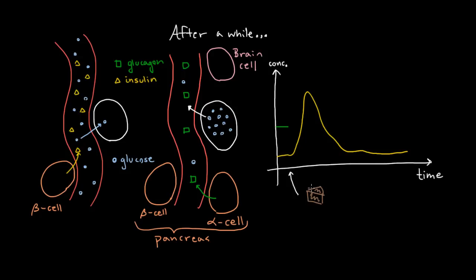Meanwhile, glucagon, once you eat the cake, it's going to quickly go down because your alpha cells in your pancreas are going to suddenly see all this increased glucose. And they're going to say, well, we don't want to be taking glucose out of storage since we have so much already in the blood. So the alpha cells are going to decrease the amount of glucagon they're producing, so that's going to go down.